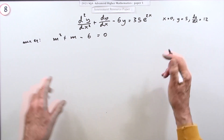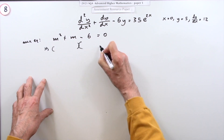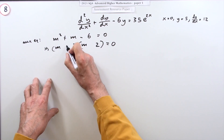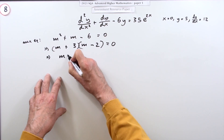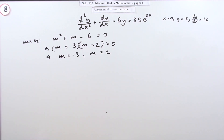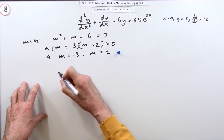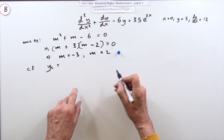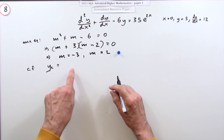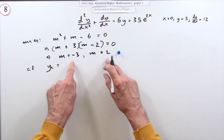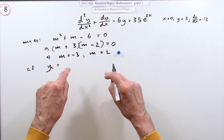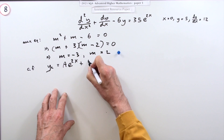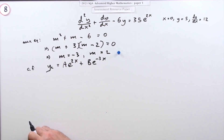Factorising m² + m − 6 = 0 gives (m + 3)(m − 2) = 0, so m = −3 or m = 2. That factorisation earns the first mark. The complementary function is therefore y_c = Ae^(2x) + Be^(−3x), since any multiple of either solution still gives zero. Writing that down is worth a mark.